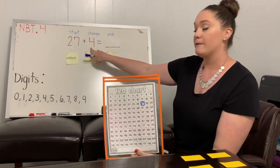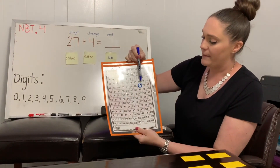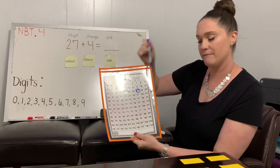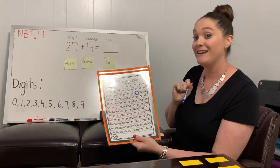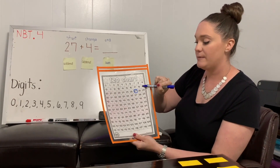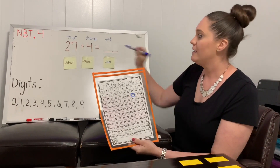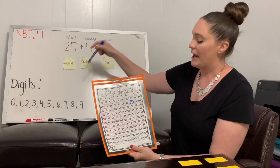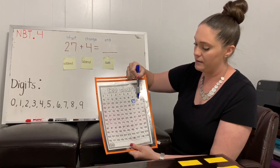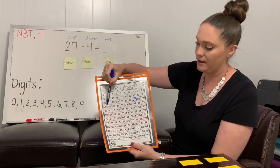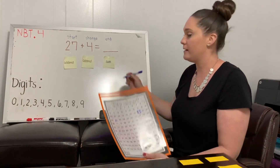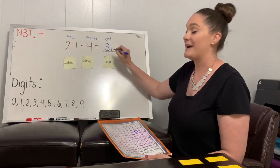Now I'm adding 4. Which way do I want to travel on my 120 grid — to the left or to the right? If you said the right, you're correct. That's because we want our numbers to become greater in value since we're adding. So 27 is where I start and we're adding 4. Let's hop 4 times: 1, 2, 3, 4. I landed on 31. 31 is my sum.